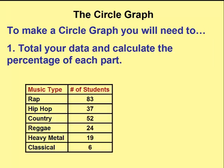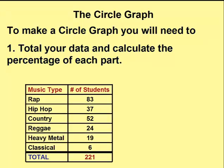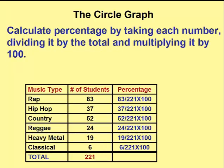The first thing we do to make a circle graph is take the total number of students that took part in the survey — in this case, two hundred and twenty-one students. Next, we calculate the percentage for each music type. To do this, we take the number of students divided by the total, then multiply by 100 to convert the decimal to a percentage.